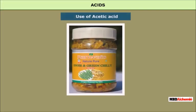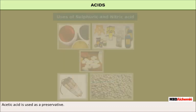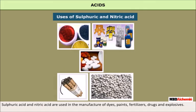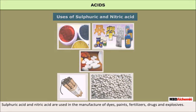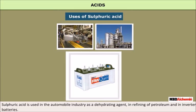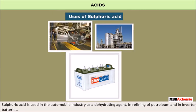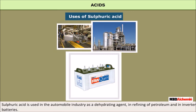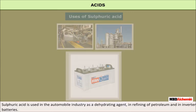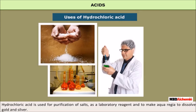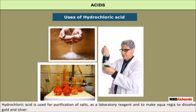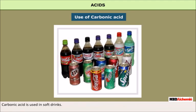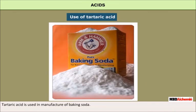Uses of Acids. Acetic acid is used as a preservative. Sulfuric acid and nitric acid are used in the manufacture of dyes, paints, fertilizers, drugs, and explosives. Sulfuric acid is used in the automobile industry as a dehydrating agent, in refining of petroleum, and in inverter batteries. Hydrochloric acid is used for purification of salts, as a laboratory reagent, and to make aqua regia to dissolve gold and silver. Carbonic acid is used in soft drinks, and tartaric acid is used in the manufacture of baking soda.